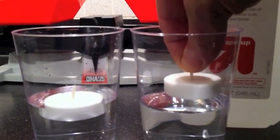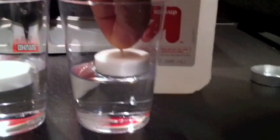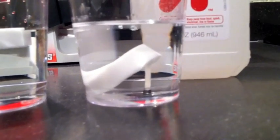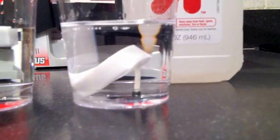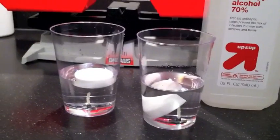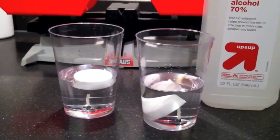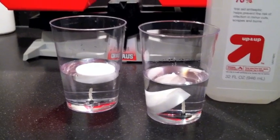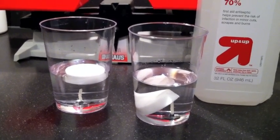And we're going to place our other tea light into the alcohol and you can see it does not float. Now these two cups have the same volume for each item. The one on the left has the same amount of water as the one on the right that has alcohol in it.